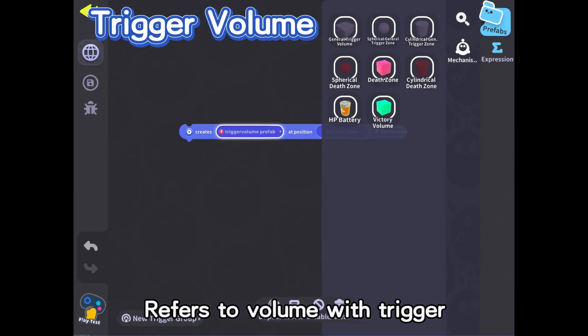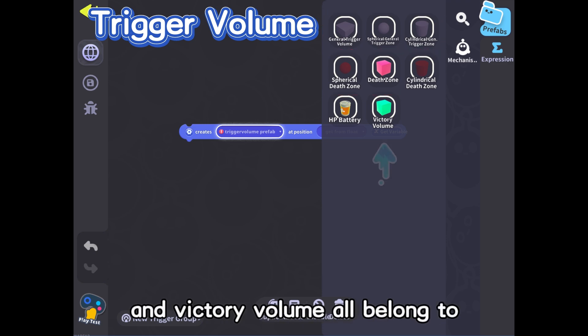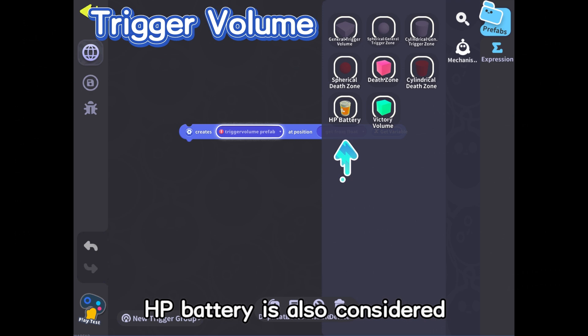Trigger volume refers to volume with trigger. General trigger volume, death zone, and victory volume all belong to the game mechanic's trigger volume. HP battery is also considered a type of trigger volume. However, event trigger volume and checkpoint volume are not covered for now.